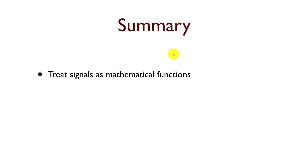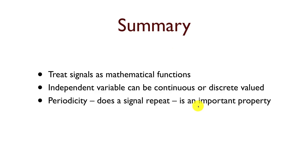So signals can be regarded as mathematical functions. And we can have independent variables that are either continuous or discrete. Any time we work with signals in a computer, we're going to have to have converted that signal to a discrete-valued independent variable. Whether a signal is periodic, in other words repeats, and the frequency of the signal, those are important properties.